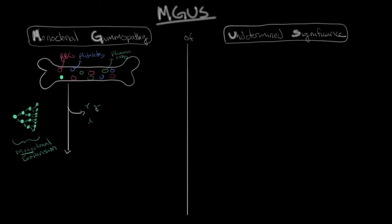This process is known as monoclonal expansion. Mono, meaning one — it all comes from one cell. And clonal, meaning replication — so you have lots of replication of one cell. All of these cells are genetically identical because they result from one parent cell. This is where you get the monoclonal part of monoclonal gammopathy of undetermined significance.